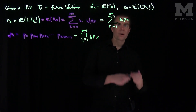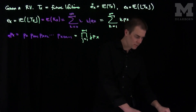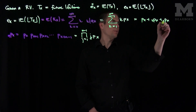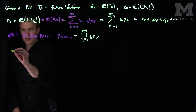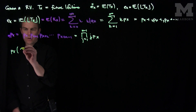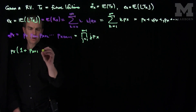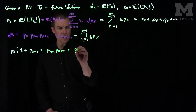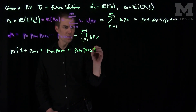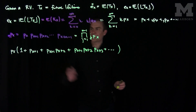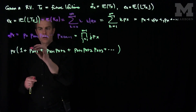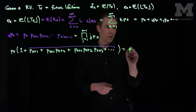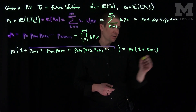Writing out the first few terms of the series gives us Px plus 2Px plus 3Px, and so on. We can pull a Px out of everything, giving Px times the quantity one plus Px+1 plus Px+1·Px+2 plus Px+1·Px+2·Px+3, and so on. We recognize that those remaining terms represent Ex+1.